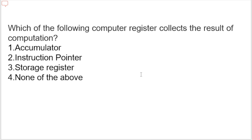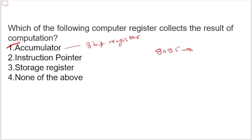Which of the following computer register collects the result of computation? Options are: accumulator, instruction pointer, storage register, or none of the above. The correct option is accumulator. The accumulator is an 8-bit register associated with the ALU. Register A is the accumulator in 8085. It is used to hold one of the operands of arithmetic and logical operations, and the final result of an arithmetic and logical operation is also placed in the accumulator.